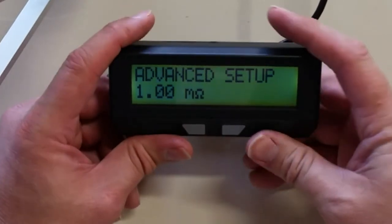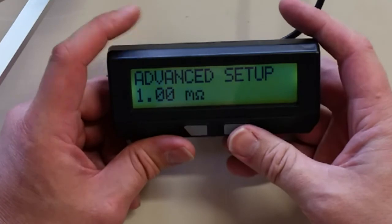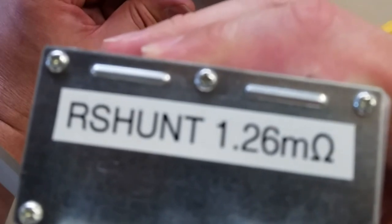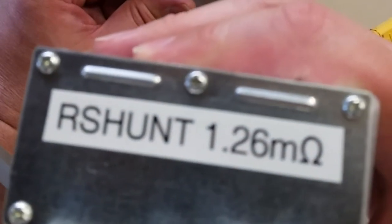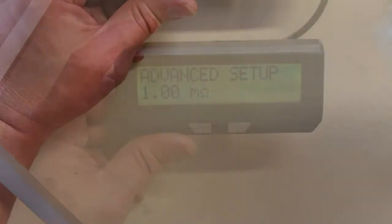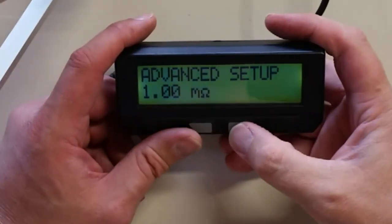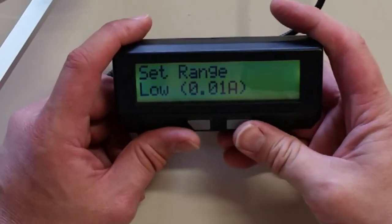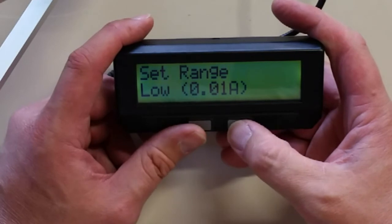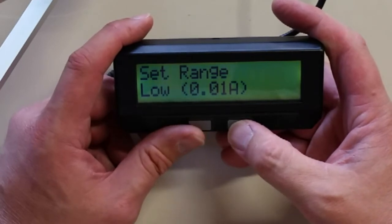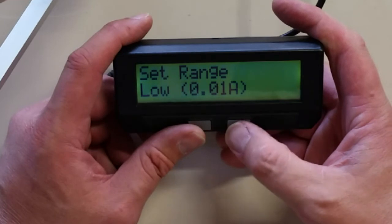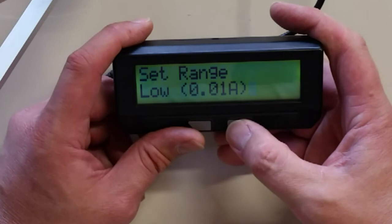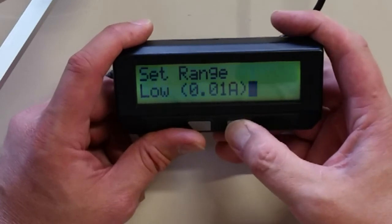Now the advanced setup. This is where we're going to set the shunt for our controller. So I have over here my controller which has a stated R shunt value of 1.26 milliohms. So I'm going to go into the advanced setup. Set range, we're going to leave this low. There's a high setting range. That's mainly for really high powered systems. We're going to go with the low setting.